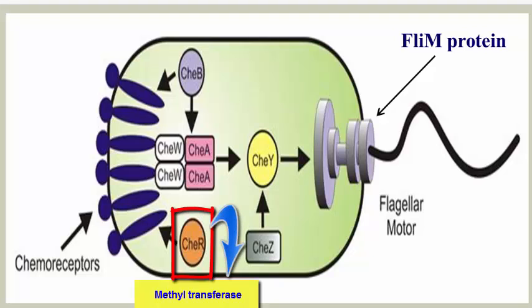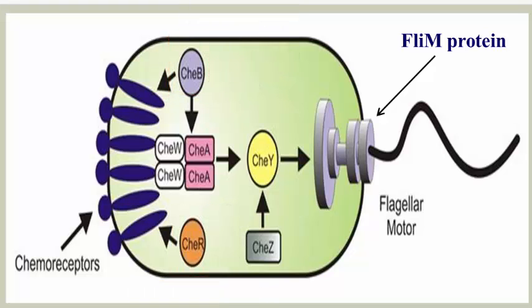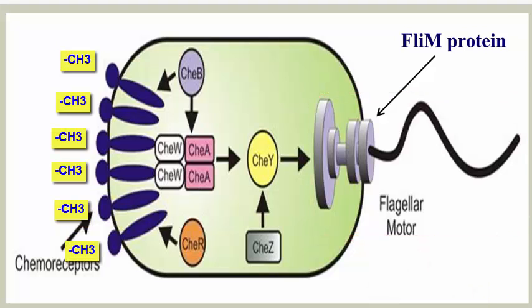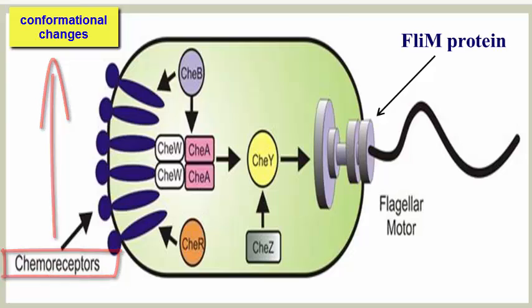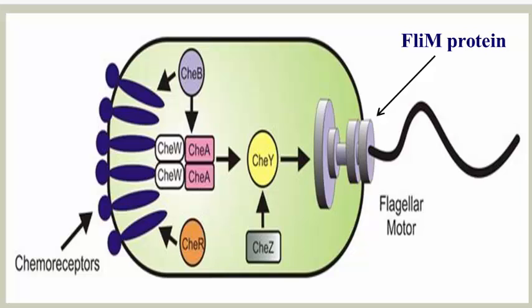CheR is a methyltransferase while CheB is a demethylase. They are responsible for the methylation state of the cytoplasmic domain of the chemoreceptors, or MCPs. Methylation of the chemoreceptor induces clockwise rotation of the flagella, whereas demethylation causes counterclockwise rotation. This is thought to occur via conformational changes of the chemoreceptor as a result of methylation and demethylation. The state of methylation of the receptor modifies the sensitivity of the chemoreceptor to prevent sensory saturation as the bacteria travel towards higher or lower concentrations. Moreover, it provides a mechanism of short-term memory allowing temporal comparisons of stimulant concentration.